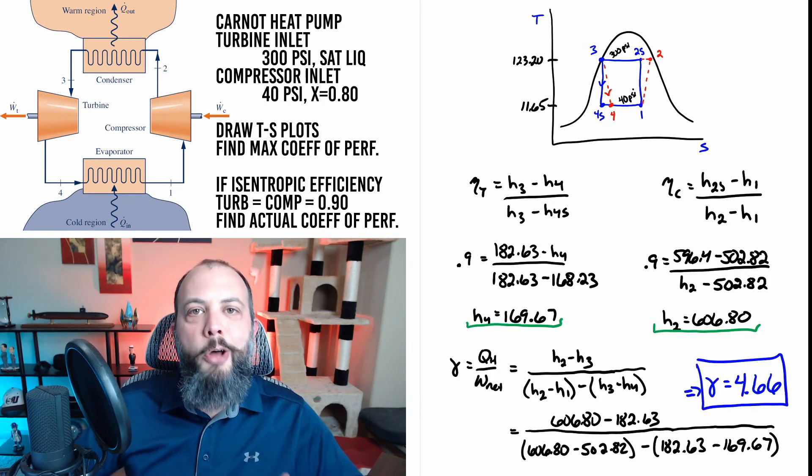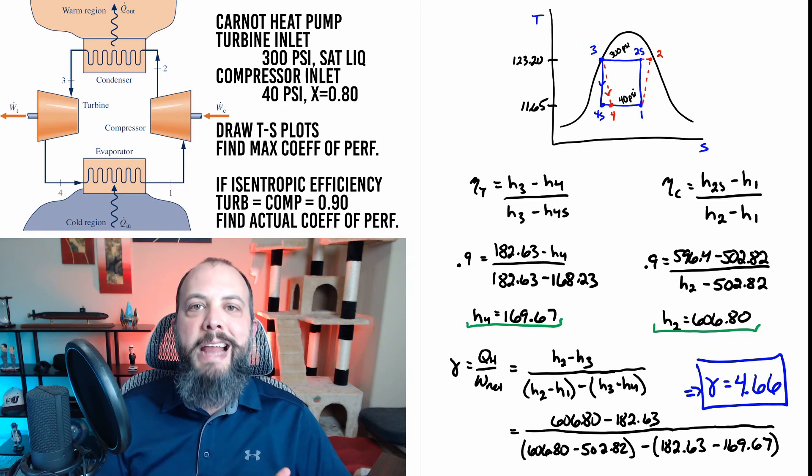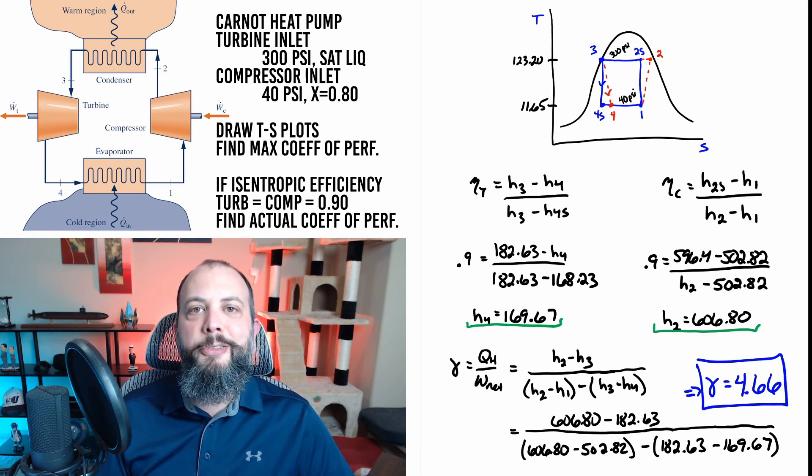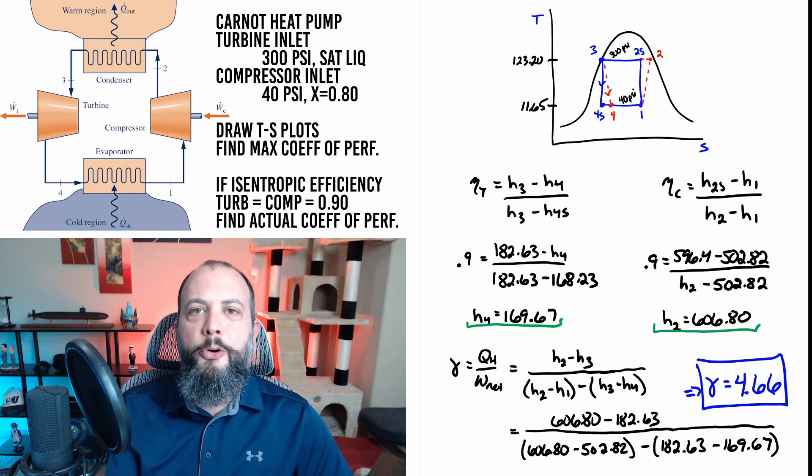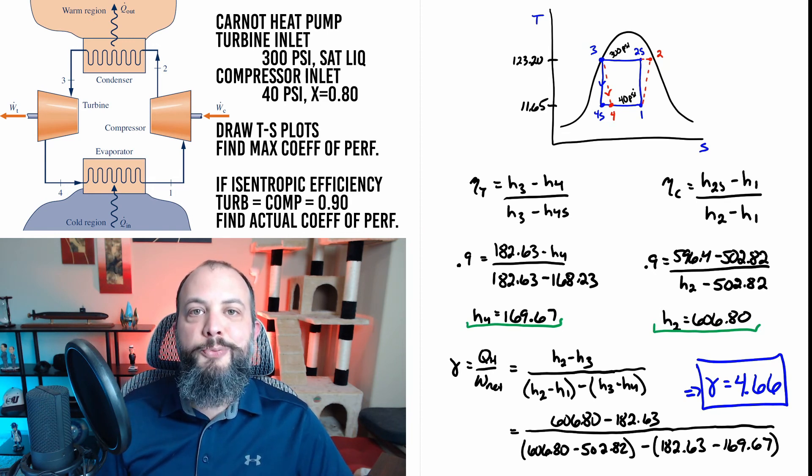And so the last step is to plug in all these enthalpies into the coefficient of performance equation which is going to be heat output to the hot source divided by the network input. So personally for sign convention I prefer to organize my enthalpy so that all of these terms will end up being positive. But I know some people choose to reverse them and always do final minus initial in which case you'll end up with a bunch of negative numbers. But if the numerator and denominator are both negative the negative signs will all cancel out anyway and we'll all get a positive value for coefficient of performance which in this case works out to be 4.66.